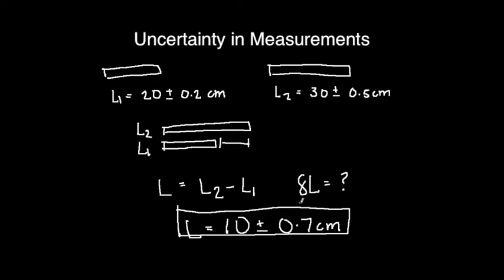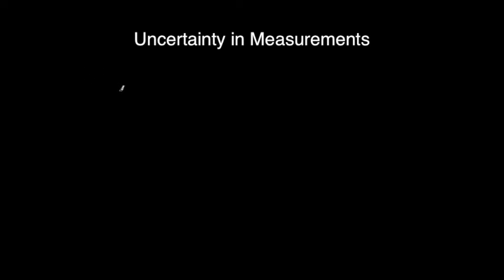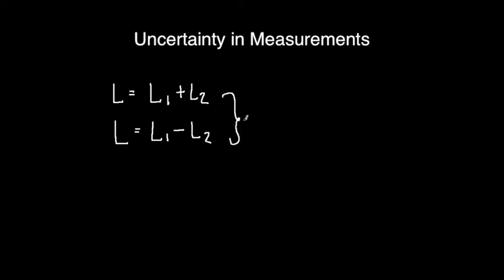When adding or subtracting two quantities, the uncertainty is the sum of the individual uncertainties. Whether we add both quantities or we subtract both quantities, both of their uncertainties is still going to be just the sum of the individual uncertainties. So whether you add both quantities or subtract them, the final uncertainty of the sum or the difference is still just the sum of both individual uncertainties.